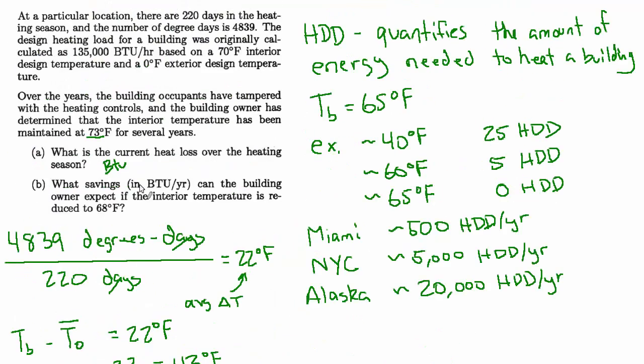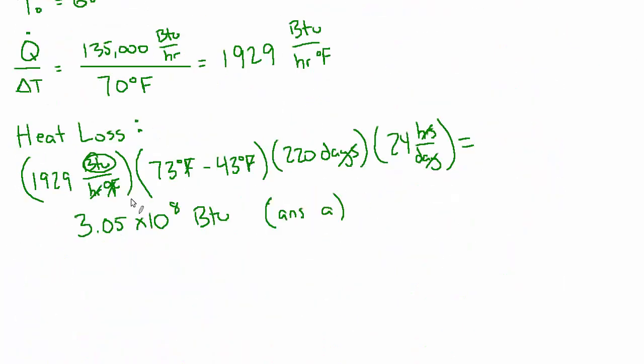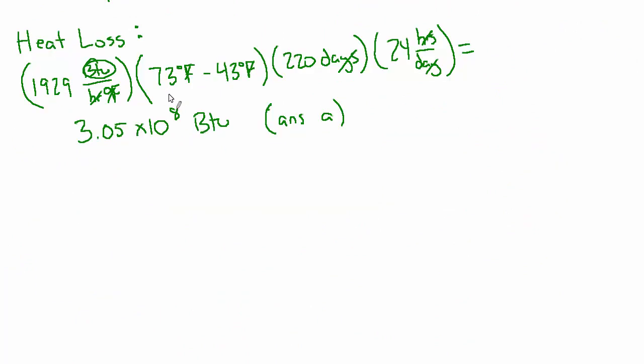Now for part B, they want us to find the savings that the building owner can expect if the interior temperature is reduced to 68. So what would change if we were to reduce that interior temperature? It's really the same calculation, except that instead of the interior temperature being 73, it's going to be 68. So the delta T, rather than being 30, is actually going to be only 25. And we could calculate the total amount of energy using a delta T of 25, and then subtract from answer A, and we would have the difference. Or if we want to go directly after the savings, we can run this same calculation with a delta T of 5, and it'll work out just the same. So let's do that. It's a little more direct.